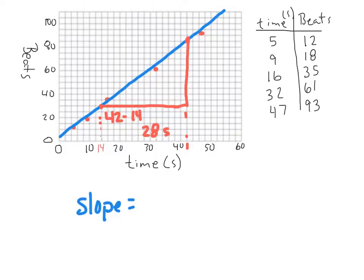And then I do the same thing for my y-axis. I started down here at 30. And I went up to 85. So I would do 85 minus 30, which is 55 beats in this case. Now we're going to calculate the slope.